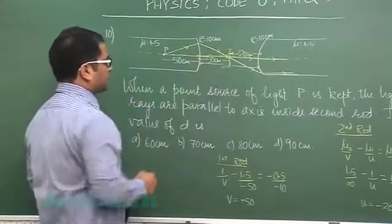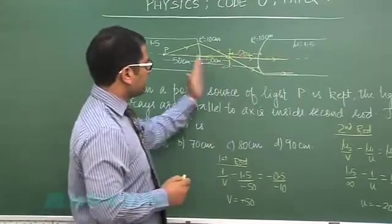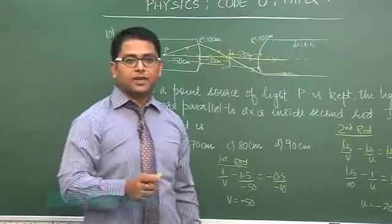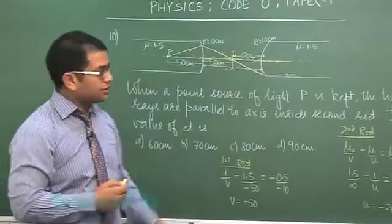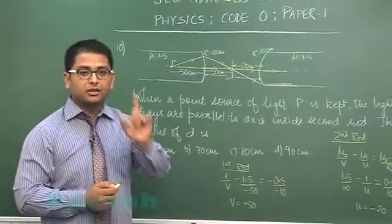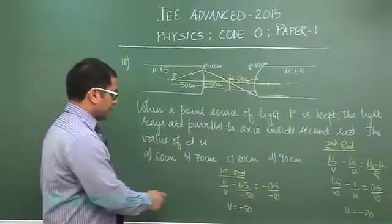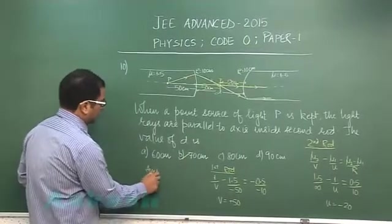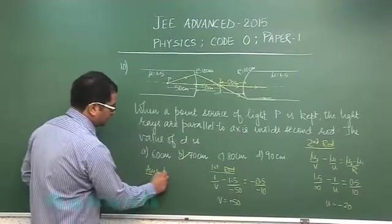So now the option is very very crystal clear, the separation between these two d has to be 70 cm. Again second consecutive question where you are having only one option correct, so that correct option is 70 cm. The option of this question number 10 would be b.